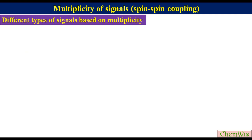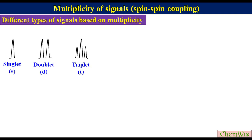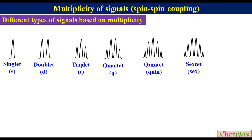In Proton NMR, a signal can be a single peak or it can consist of a bunch of peaks depending upon the number of equivalent interactable protons. The Proton NMR signal can be a singlet, doublet, triplet, quartet, quintet, sextet, septet, etc.